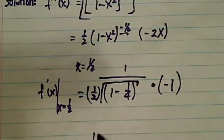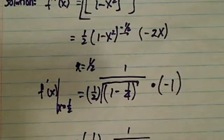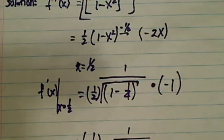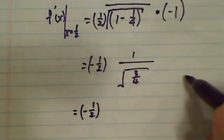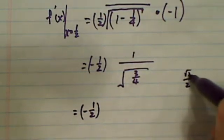So we have minus one-half. We have 1 over the square root of 3/4. Minus one-half here, and I have a 2. So this is 2 over radical 3, and the 2 goes on top.